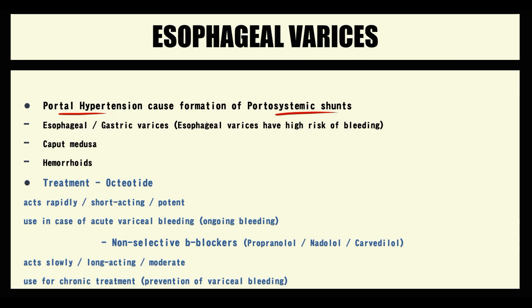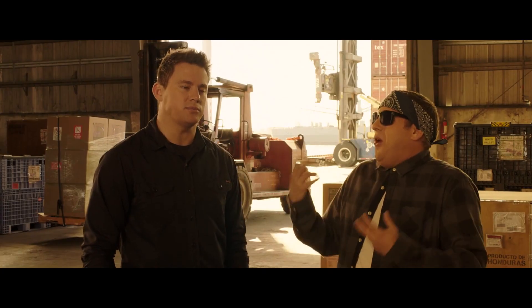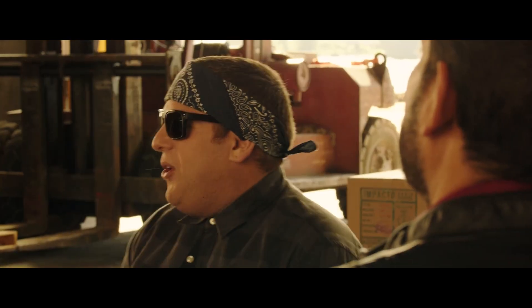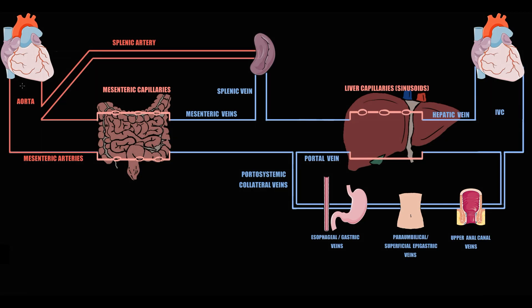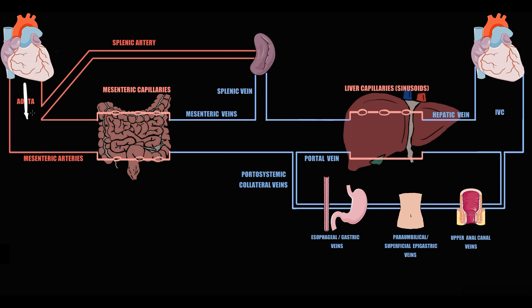To understand how portosystemic shunts are formed, we have to recall splanchnic circulation. Initially, the left ventricle pushes blood into the aorta, and from the aorta blood goes into the splenic artery that supplies blood to the spleen and mesenteric arteries that supply blood to the intestine, where fluid exchange occurs in mesenteric capillaries. Then blood from the spleen via the splenic vein and from the intestine via mesenteric veins is delivered to the portal vein.